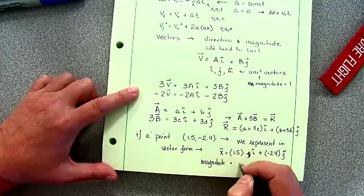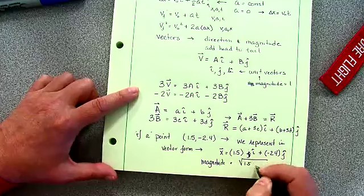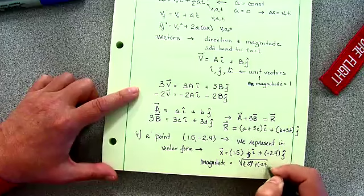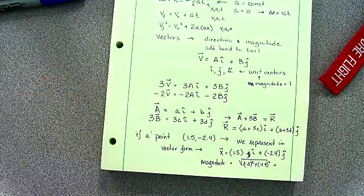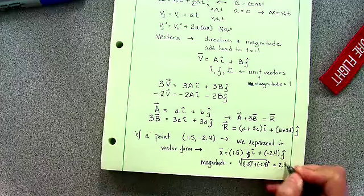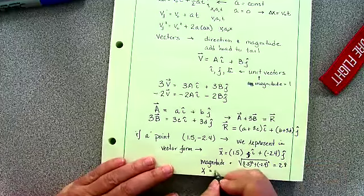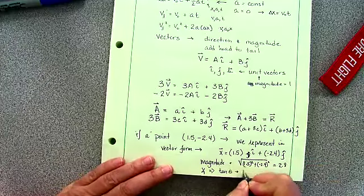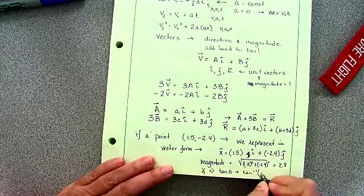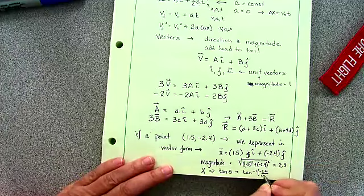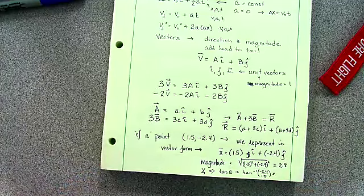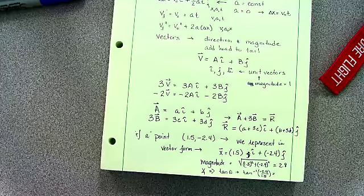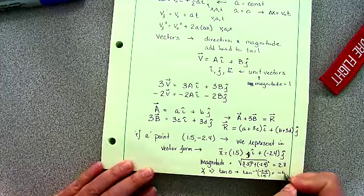We can find out its magnitude. Magnitude is going to equal the square root of 1.5 squared plus minus 2.4 squared, and that ends up as 2.8. And the angle is going to be related to the tangent, which gives us the arc tangent, and I've got a negative 2.4 divided by 1.5.